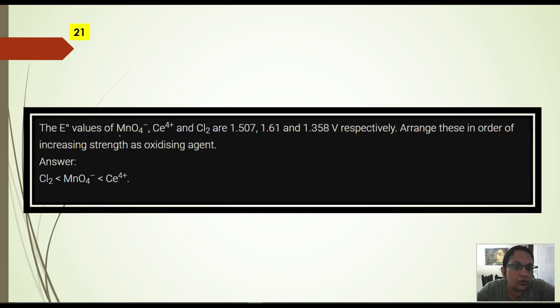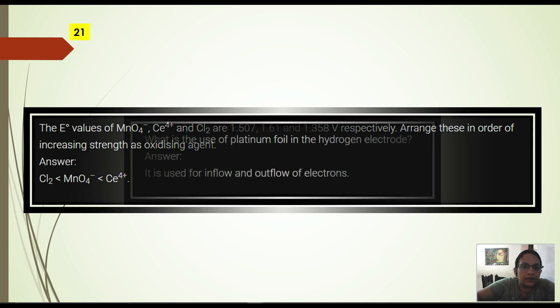The E° value of MnO4-, Ce4+ and Cl2 are given. E° values are given. Now we have to arrange them in increasing strength as oxidizing agent. Which is the best oxidizing agent? You can see, highest value is 1.61 which is cerium Ce4+. So highest is its value. Then between MnO2 and Cl2 you see, next value which is higher is 1.5, MnO4-. Lowest value is Cl2. In this way our increasing order of oxidizing agent will be formed. More the value, higher the oxidizing agent.